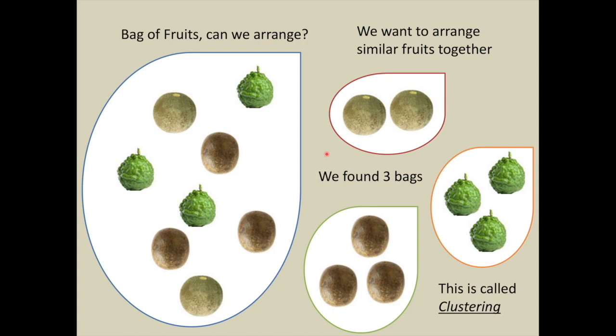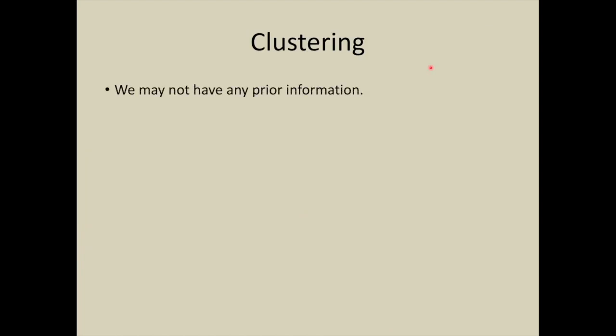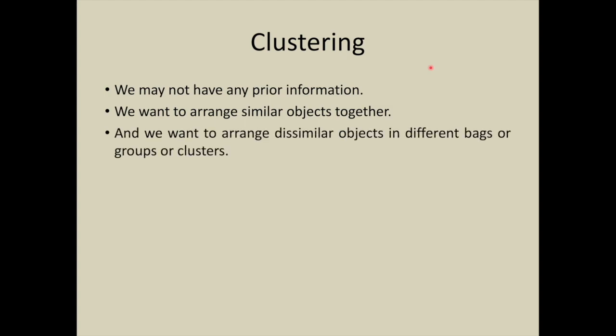The learning process to achieve this arrangement is unsupervised learning. So basically in clustering, we may not have any prior information as we had in the supervised learning tasks. Here we want to arrange similar objects together, and we want to arrange dissimilar objects in different bags or groups or clusters. Now let us see some examples of clustering in real life cases.